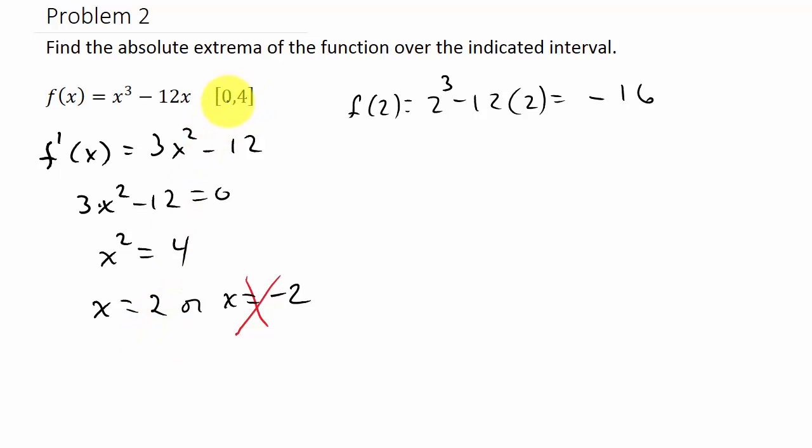Now the endpoints of the interval we have to evaluate in the function. So f(0). That's 0³ - 12 times 0 is 0. And then the 4.